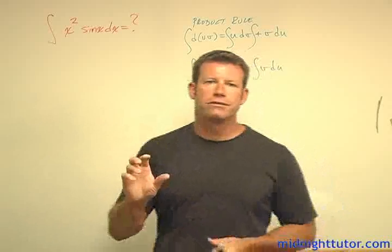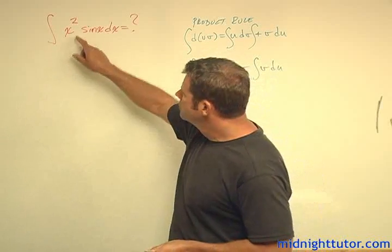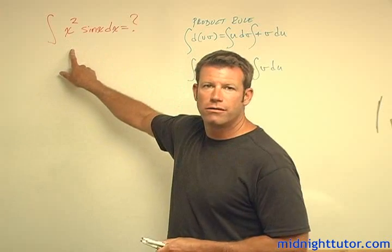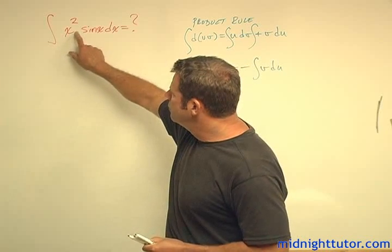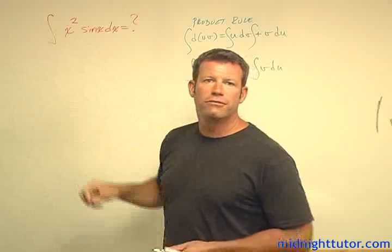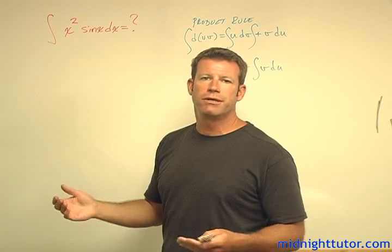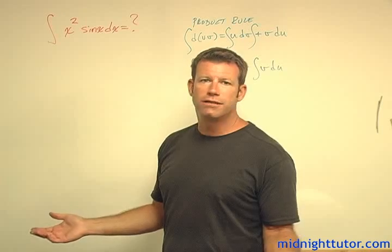And the key here is to use integration by parts and choose your terms such that in each successive round the exponent of the polynomial is reduced by one and then eventually it becomes zero, which means it doesn't exist, and then you're done.